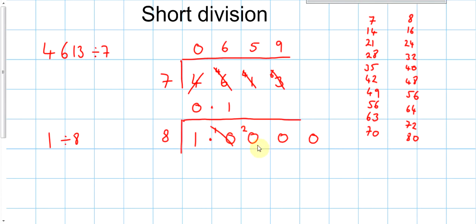8s into 20 go 2, remainder 4. Because 2 8s are 16, and that's 4 smaller than 20. 8s into 40 go 5. So, 1 divided by 8 is 0.125.